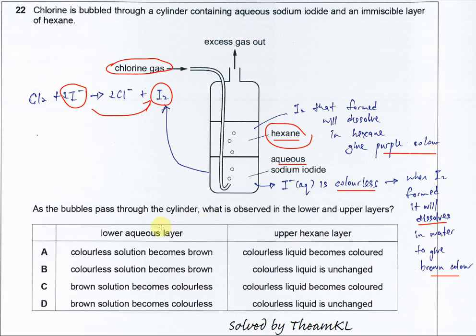So the change in the lower and upper layers is clear. For the lower layer, we know that iodine is formed. Therefore, colorless becomes brown, so it's either A or B. The upper hexane layer, colorless liquid becomes colored. Yeah, it becomes purple color. So B is unchanged - wrong.